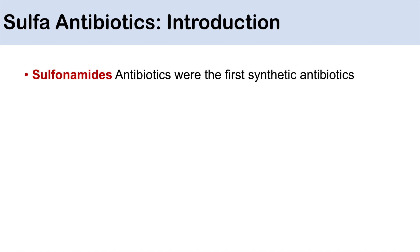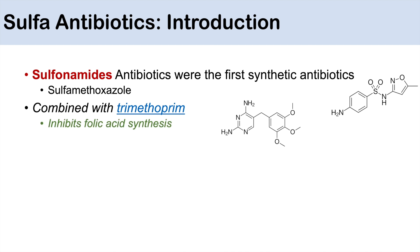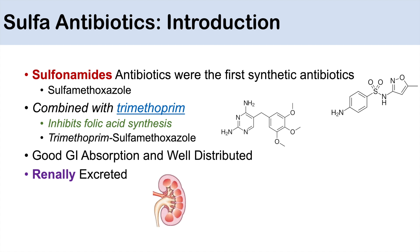Sulfa or sulfonamide antibiotics are the first synthetic antibiotics, and one example is sulfamethoxazole. Sulfamethoxazole is typically combined with trimethoprim, which is an inhibitor of folic acid synthesis, and when we combine these two, we call it trimethoprim-sulfamethoxazole, or you might have heard of Septra. These antibiotics have good GI absorption, are well distributed, can cross the blood-brain barrier in small proportions, and are renally excreted.